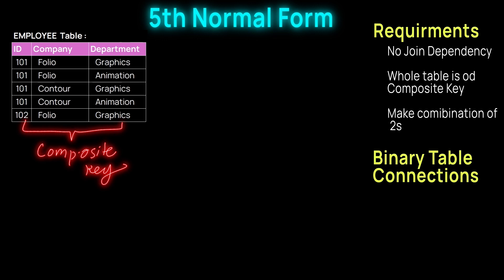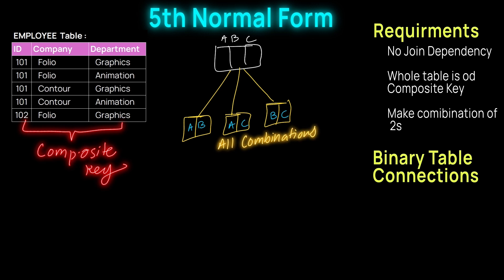Fifth normal form is achieved by splitting the table into maximum possible solutions. In our case, there is a three-column table, and a three-column table can be split maximum to three more tables with all the binary combinations. Binary combinations means two-column tables.